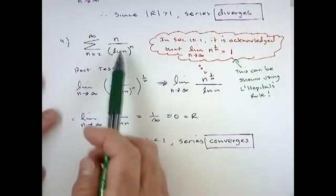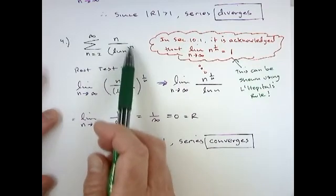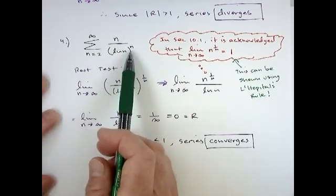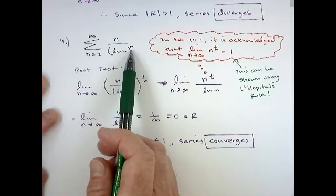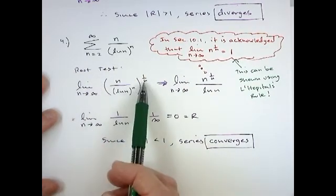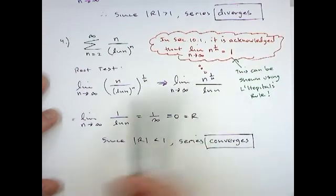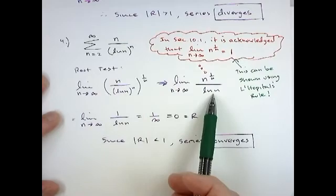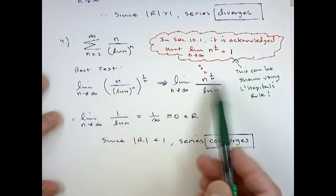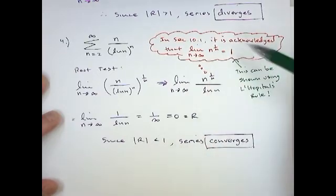Okay. n divided by ln of n to the n. Usually we use the root test, you have the whole thing raised to the n, but sometimes it's still an option. So we're going to do the root test on this. We're going to take the nth root of our formula. Now that's going to leave us, it's going to unlock the ln. So we have ln of n on the bottom, but on the top we have n raised to the 1 over n. And this is another one kind of like the e limit. In the very beginning section 10.1, when we were doing sequences.